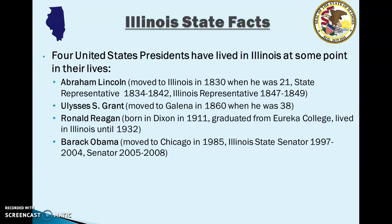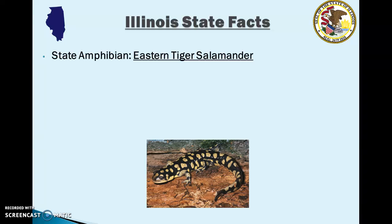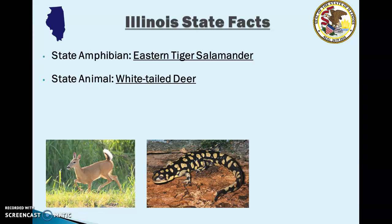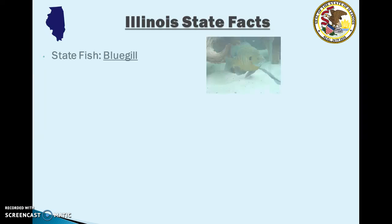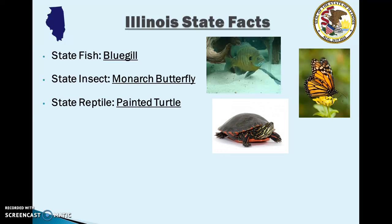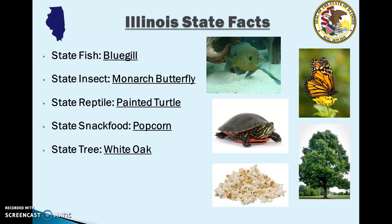Here are some of Illinois's state symbols: our state amphibian is the eastern tiger salamander; our state animal is the white-tailed deer; state bird is the cardinal; state flower is the violet; state fish is the bluegill; state insect is the monarch butterfly; state reptile is the painted turtle; state snack food is popcorn; and our state tree is the white oak. That's all for this video — I'll be back soon with another one on the Illinois State Constitution. This has been Professor Blazik, and I will see you next time.